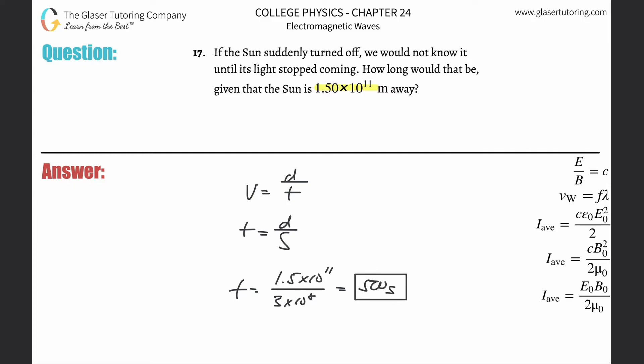So how long is 500 seconds in terms of a minute? Well, simply take that and divide it by 60, and that would be about eight and a third, 8.33 minutes. That's about how long.